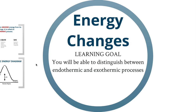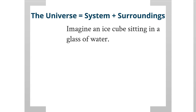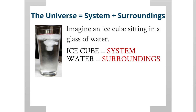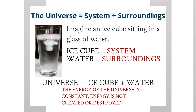We'll be able to distinguish between endothermic and exothermic processes. Let's start with a simple equation: the universe equals the system plus the surroundings. To understand what that means, let's imagine an ice cube sitting in a glass of water. The ice cube is the system, the water is the surroundings. So the universe equals the ice cube plus the water — that glass of ice water represents the entire universe we're observing.